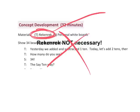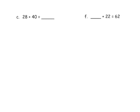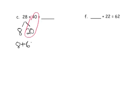Let's practice using the number bond first. For 28 plus 40, we're going to use the number bond. I'll take 28 and break it up into 8 plus 20. Then I can add the multiples of 10: 40 plus 20 equals 60. So now we have 8 plus 60, which is 68.